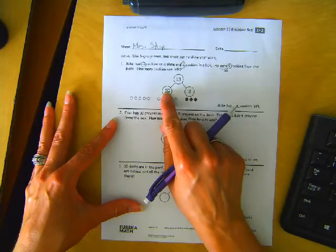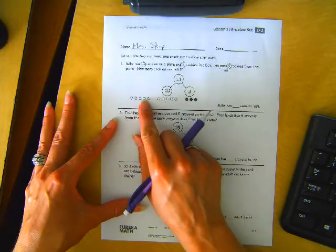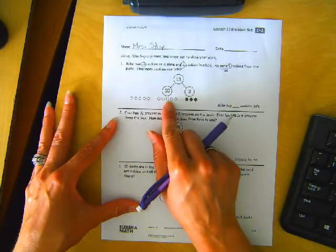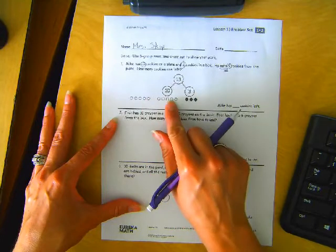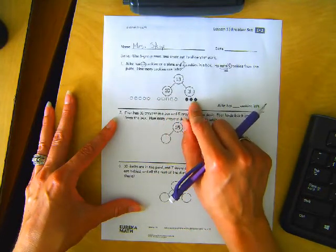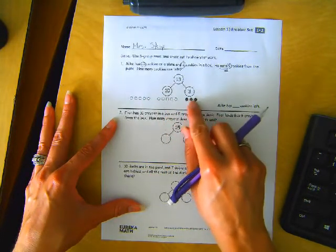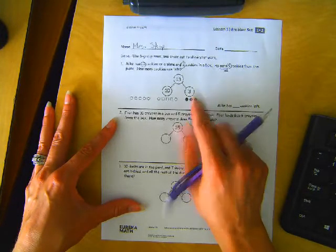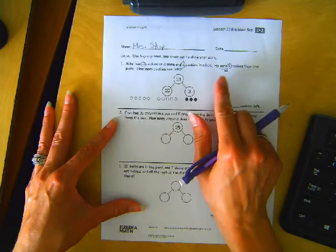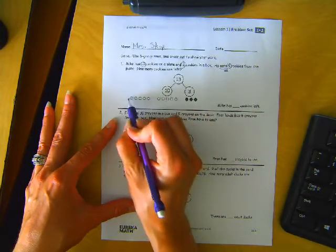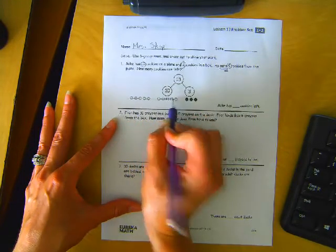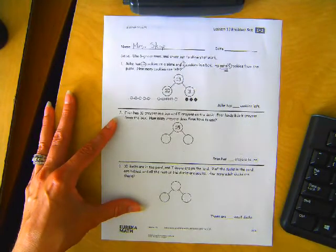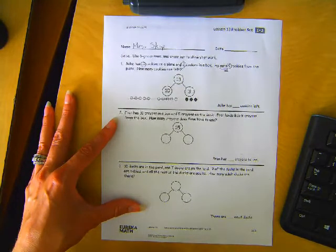Here's where it shows the ten cookies on the plate. Notice how they have the five group rows to show the ten. And then for the three, they did dark circles to show cookies in a box. So now he eats nine cookies from the plate. So we're going to cross off nine very quickly. Nice and easy to do when they're in a nice straight row like that.